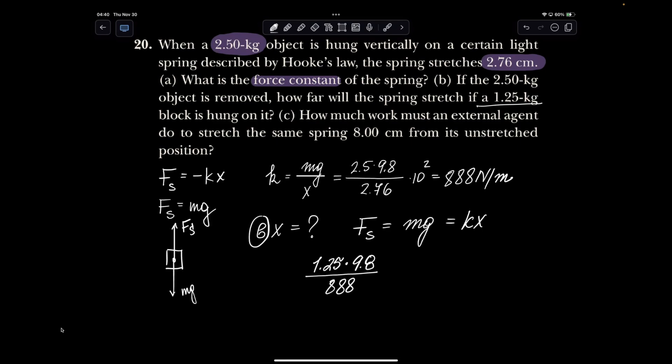Before I plug this into the calculator, what I notice is that the mass is half of what it was before. Well, if the mass was half of what it was before, the force of gravity is half of what it was before. Therefore, force of spring is going to be half of what it was before. Without doing this, I could also just say, well, x is going to be half of x in A, and it's just going to be 1.38 centimeters.